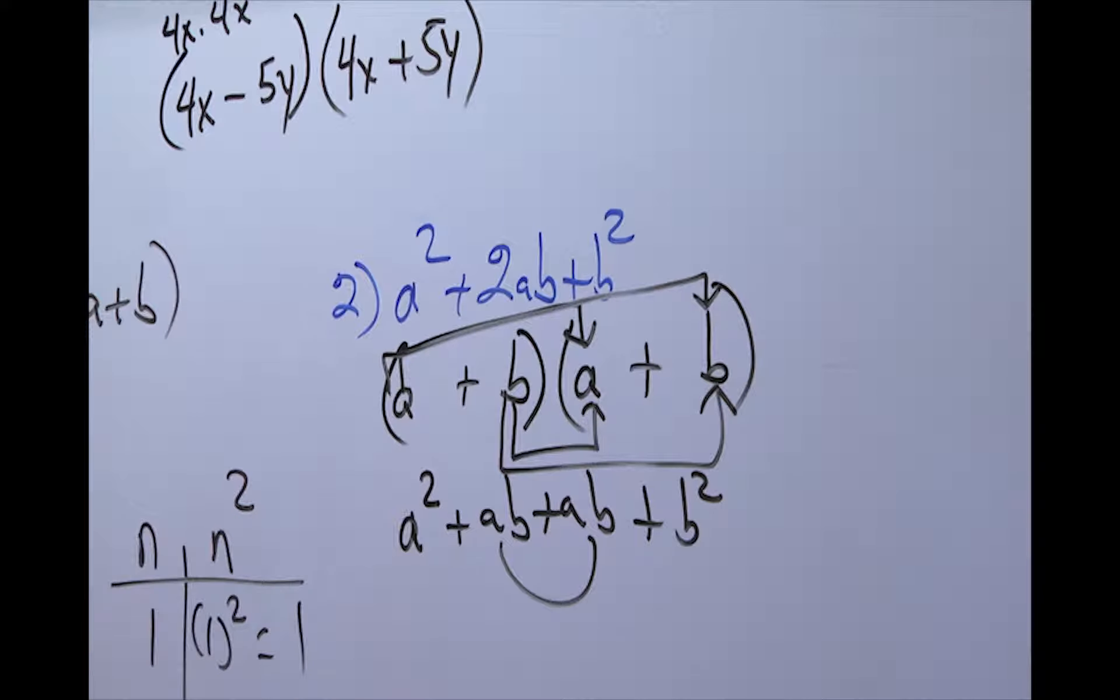These are like terms and everything is positive. We have 1ab plus 1ab. That would give us 2ab. And we bring down your b² as well as your a². So as you see, if you multiply, you will have your original problem.